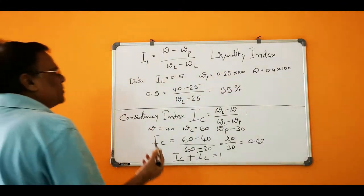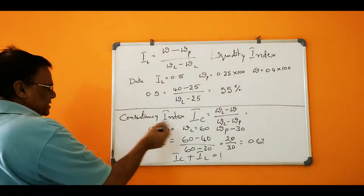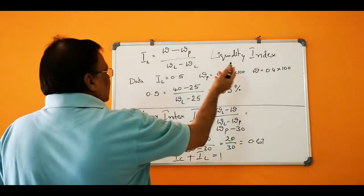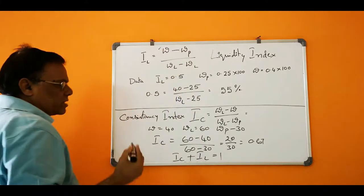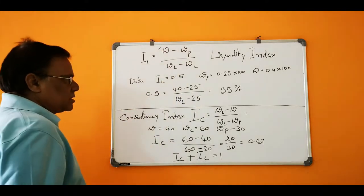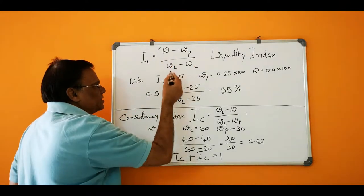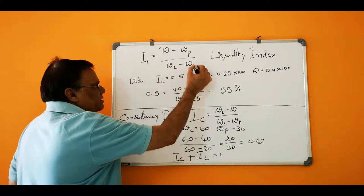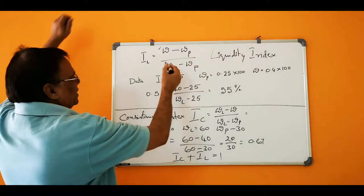Indices in soil mechanics: liquidity index as well as consistency index. The liquidity index is given as natural water content or water content in the site minus plastic limit of the soil, divided by liquid limit of the soil minus plastic limit of the soil.